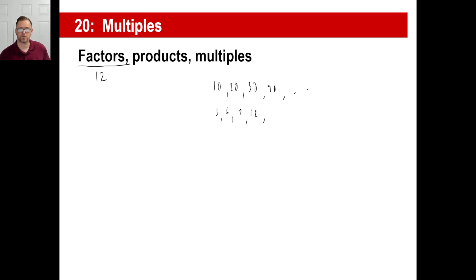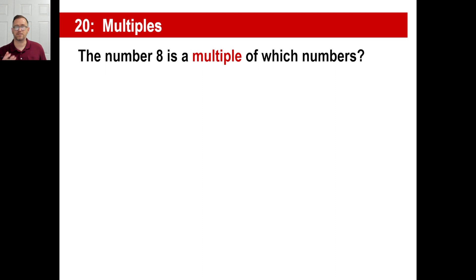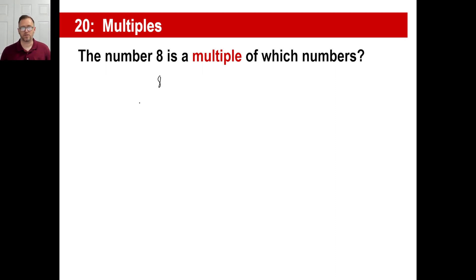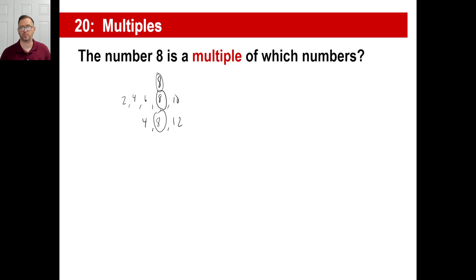So make sure you know the difference among those three terms. You tell me: the number 8 is a multiple of which numbers? Well, the obvious one — 8 is a multiple of 8, it's the first one. The number 8 is also a multiple of 2: 2, 4, 6, 8, 10 — there it is. You could also say 8 is a multiple of 4: 4 times 1 is 4, 4 times 2 is 8. There it is again. That's what a multiple is.